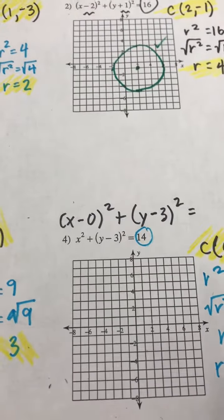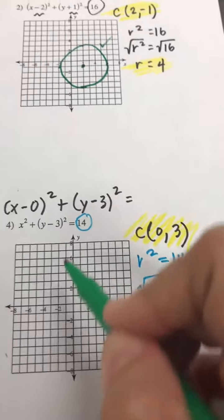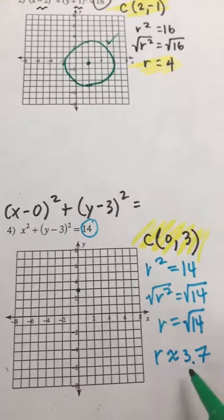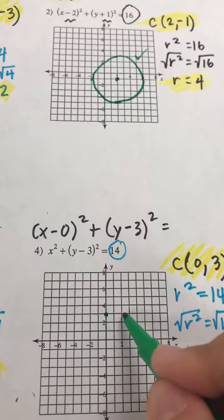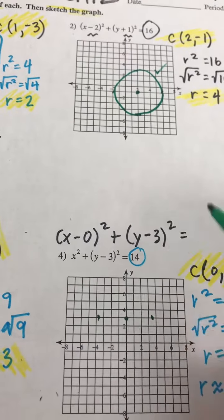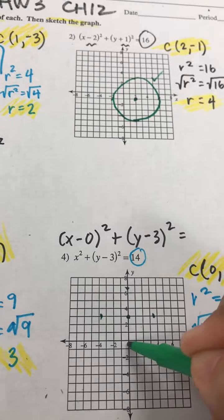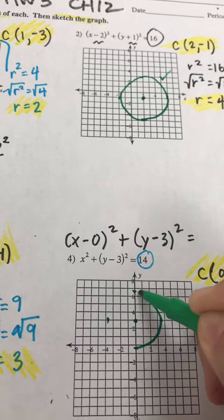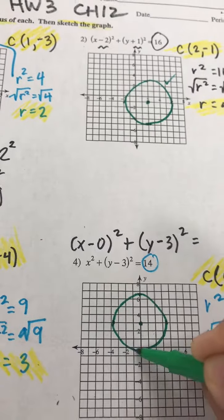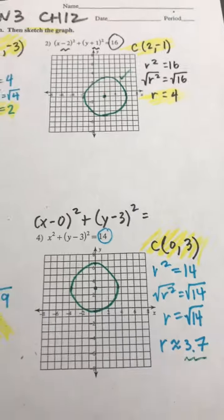Just kind of rough. So my center here is at 0, 3. And my center is about almost 4, not quite 4 to the left, not quite 4 to the right, not quite 4 up, not quite 4 down. That's a circle of a radius of about 3.7. Awesome.